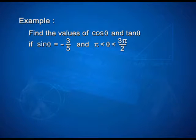Now we shall solve some problems using signs of trigonometric ratios in different quadrants. Find the values of cos theta and tan theta, if sin theta is equal to minus 3 upon 5 and theta lies between pi and 3 pi by 2.